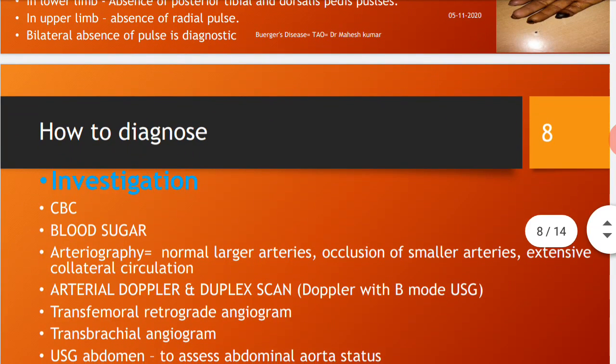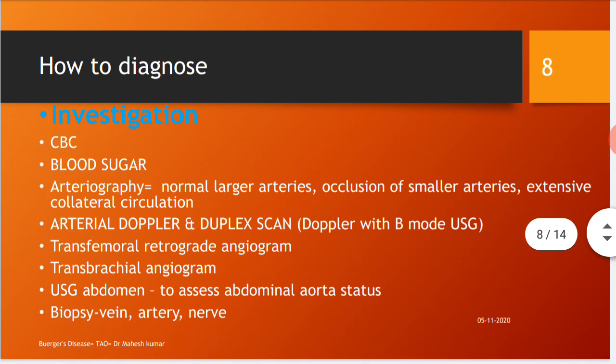Investigations for Buerger's disease include CBC to check hemoglobin level and blood sugar level, to make a differential diagnosis from diseases that mimic Buerger's disease. On arteriography, normal larger arteries, occlusion of smaller arteries, and extensive collateral circulation are seen. Arterial Doppler and duplex scan — Doppler with B-mode USG — is a common investigation to diagnose Buerger's disease.